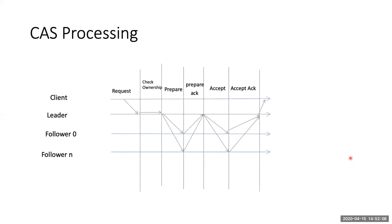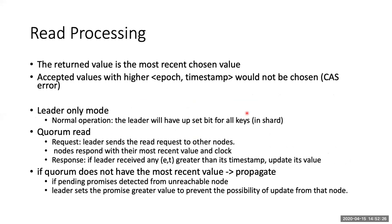For the slow path, if the leader is not the owner, it starts with phase one of Paxos, sending a prepare request and waiting for the prepare acknowledgement, then follows with the accept phase. For reads, there are two requirements: the returned value must be the most recent chosen value, and an accepted value with a higher epoch timestamp should not be chosen, which would create a CAS error to prevent other nodes from setting that value.